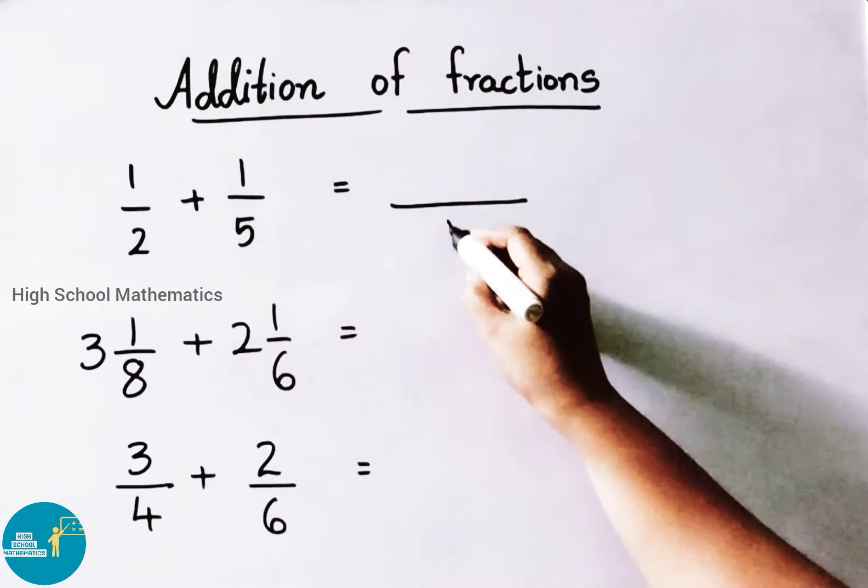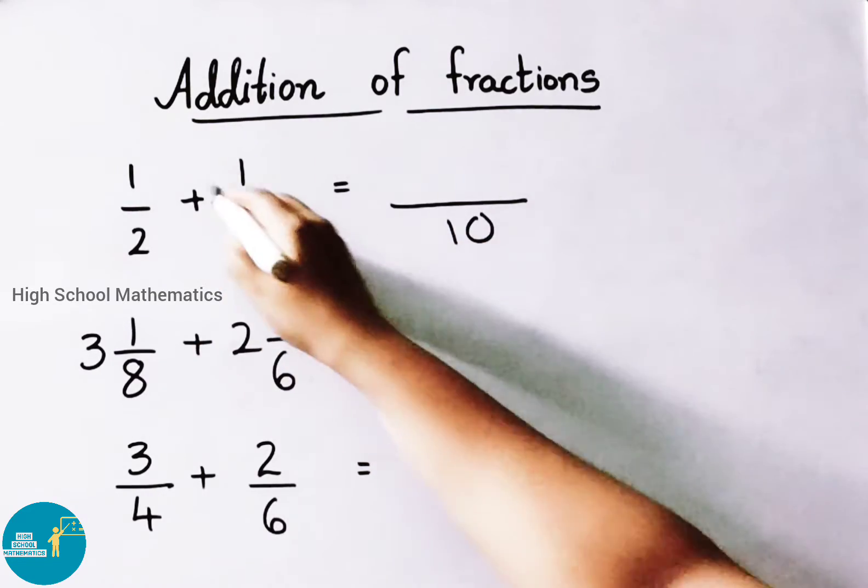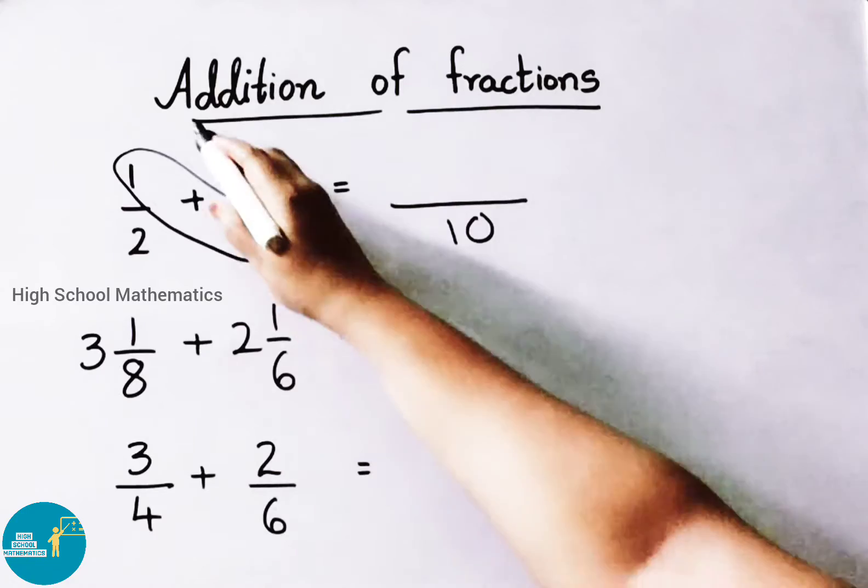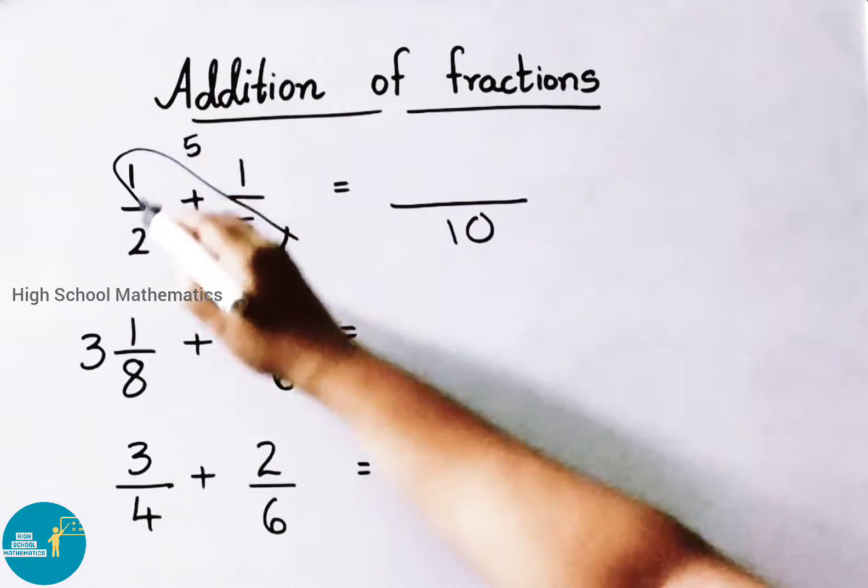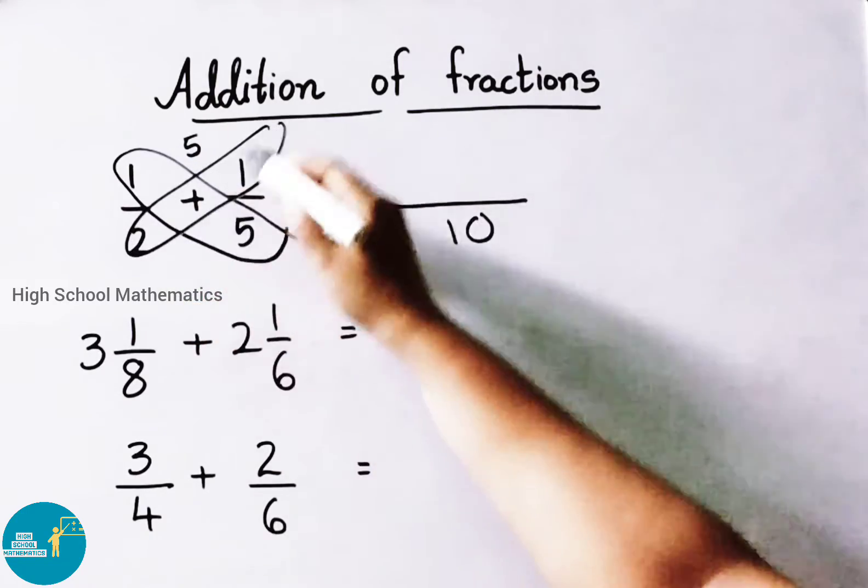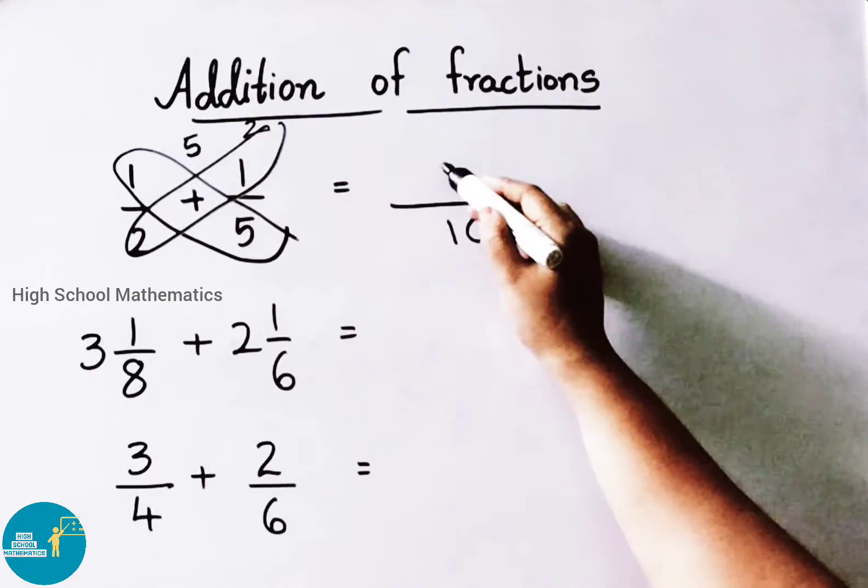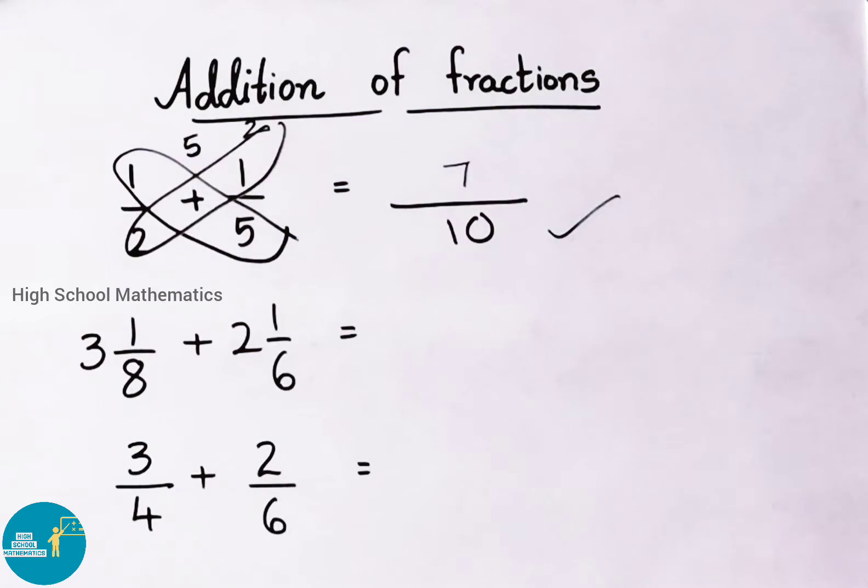2 into 5, write down 10. Then cross multiply. 1 times 5 is 5, 1 times 2 is 2. So 5 plus 2 equals 7. So the answer is 7 by 10.